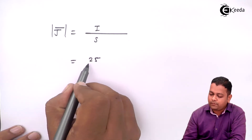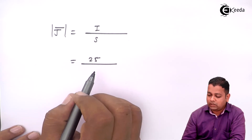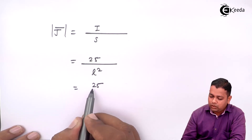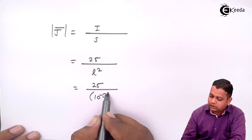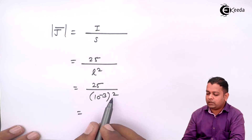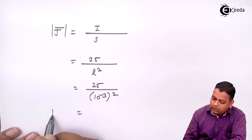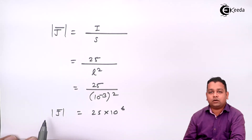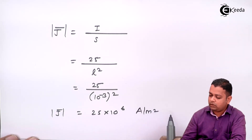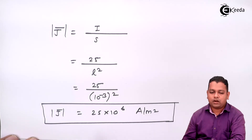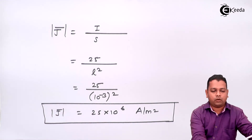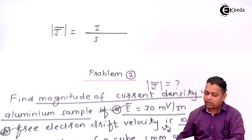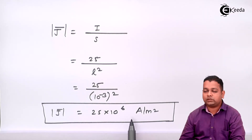The surface area is L² = (10⁻³)². So |J-bar| = 25 / (10⁻³)² = 25 × 10⁶ ampere per meter square. This is the required answer for part C: the magnitude of current density is 25 × 10⁶ A/m².